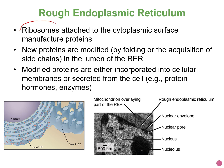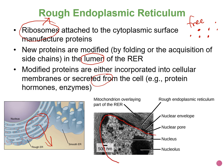Ribosomes attached to the rough ER make proteins destined either to leave the cell — to be secreted — or to be incorporated into membranous structures. Free ribosomes floating in the cytoplasm, not attached to the rough ER, make proteins that stay somewhere in the cytoplasm. For ribosomes attached to the rough ER, the proteins are sometimes modified, and that modification happens in the lumen within the membranous sacs. These modified proteins will eventually be incorporated into cell membrane structures or secreted from the cell.